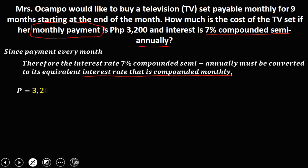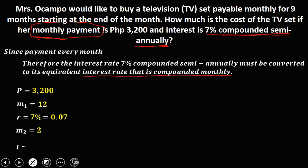From the problem, these are the given. The periodic payment is 3,200. The payment interval is M sub 1 — monthly payment — so therefore 12 times in a year. The compounding period is M sub 2 — compounded semi-annually — so therefore twice in a year. And the time is 9 months.